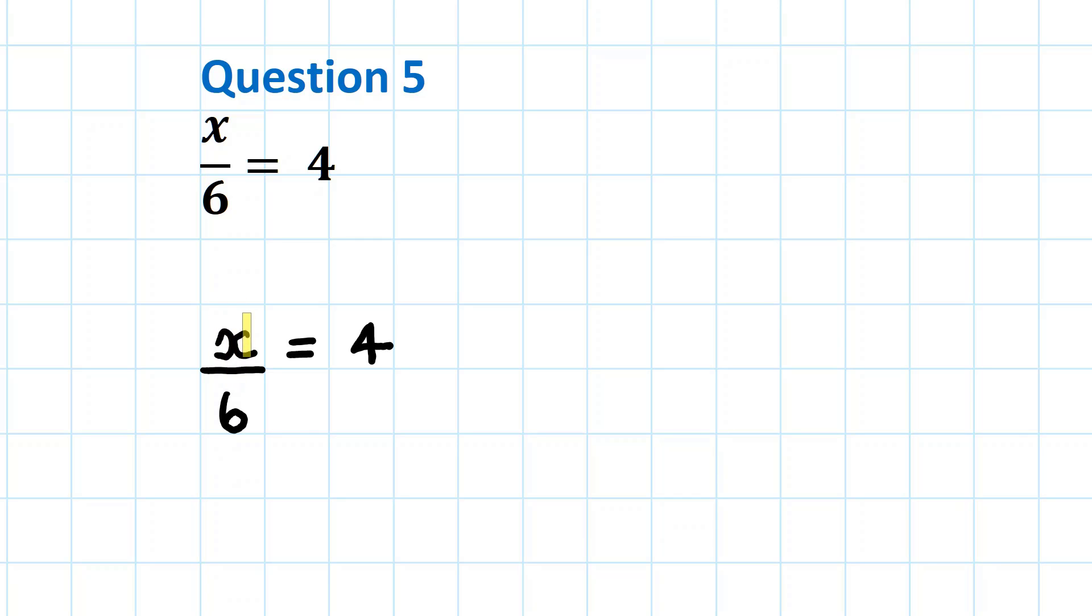We need to get x on its own, but it's divided by 6. We need to get rid of the 6. We need to undo the division by multiplying by 6.